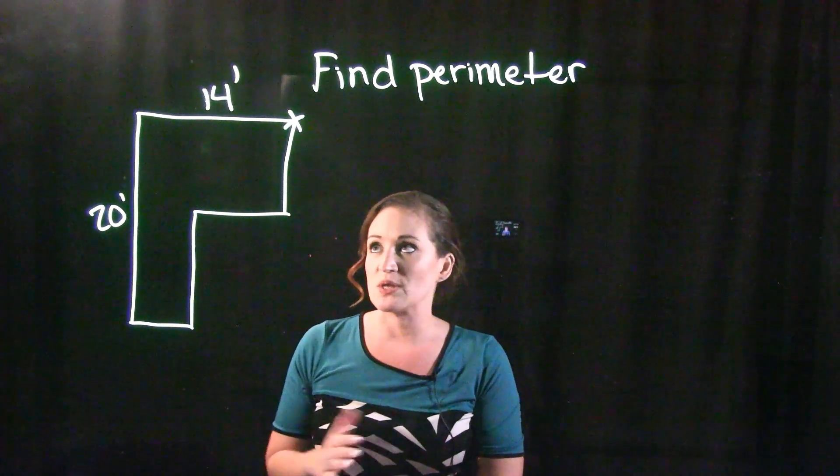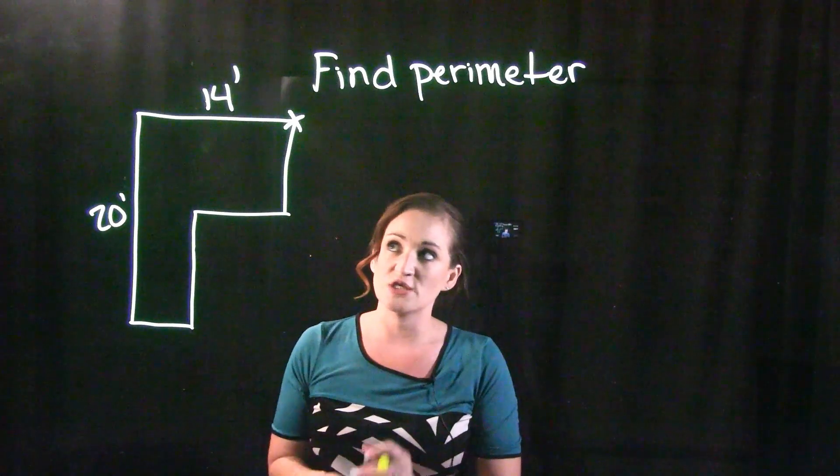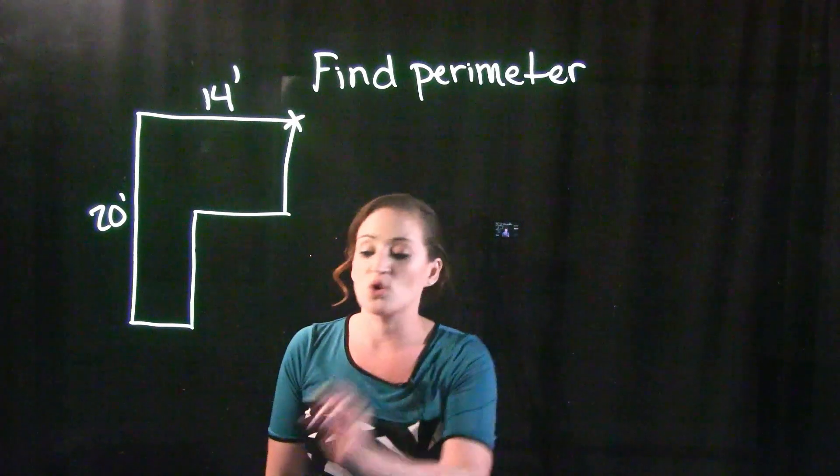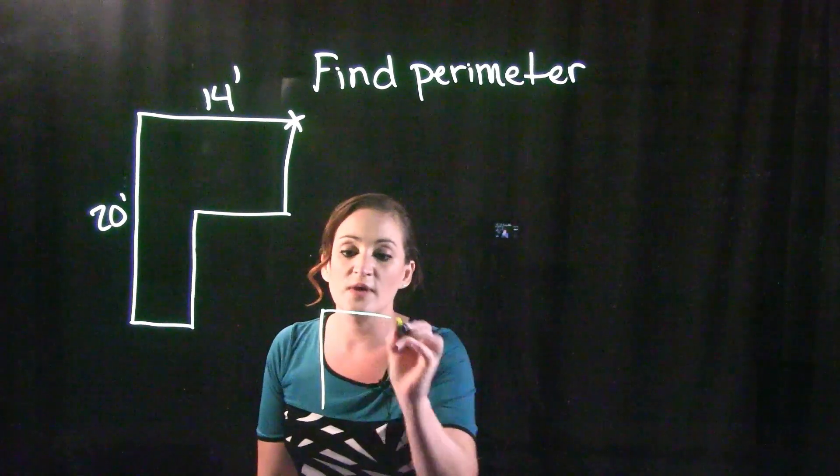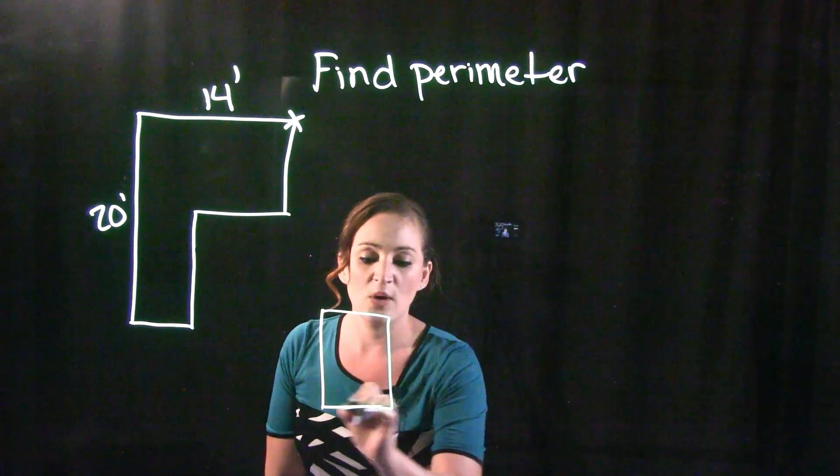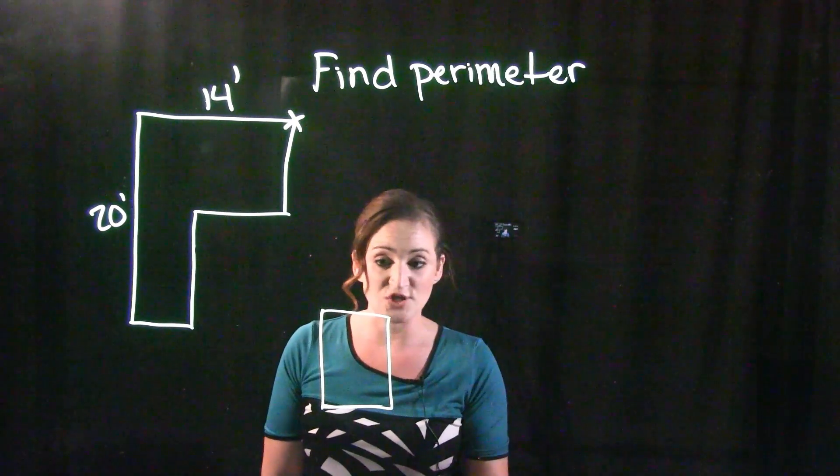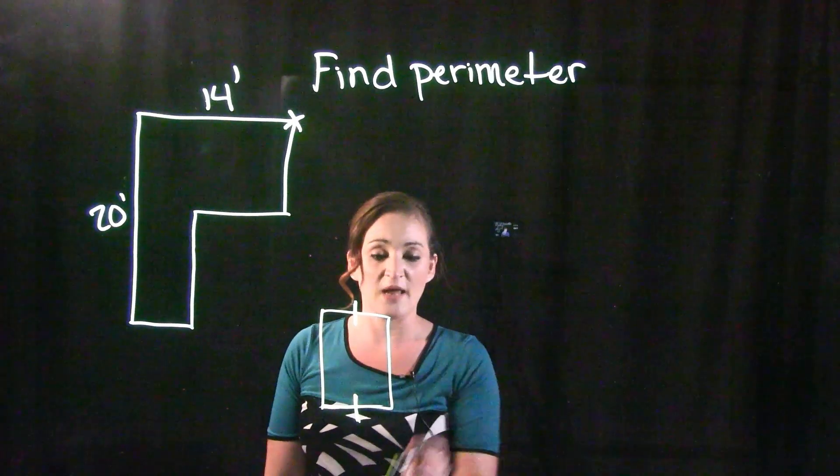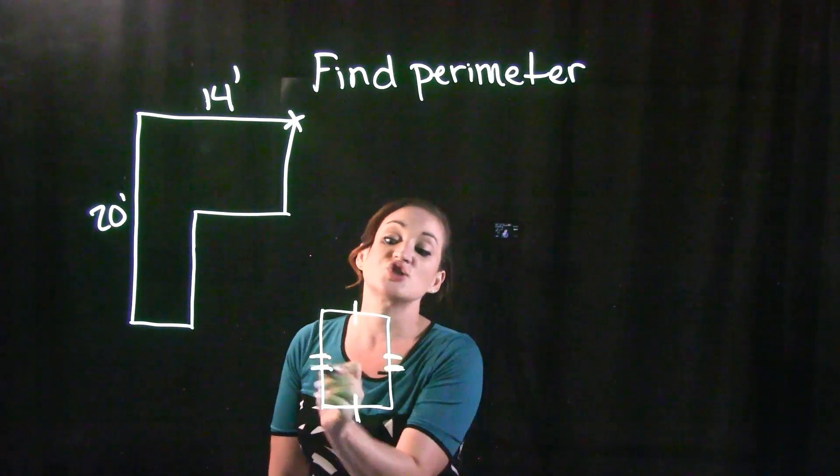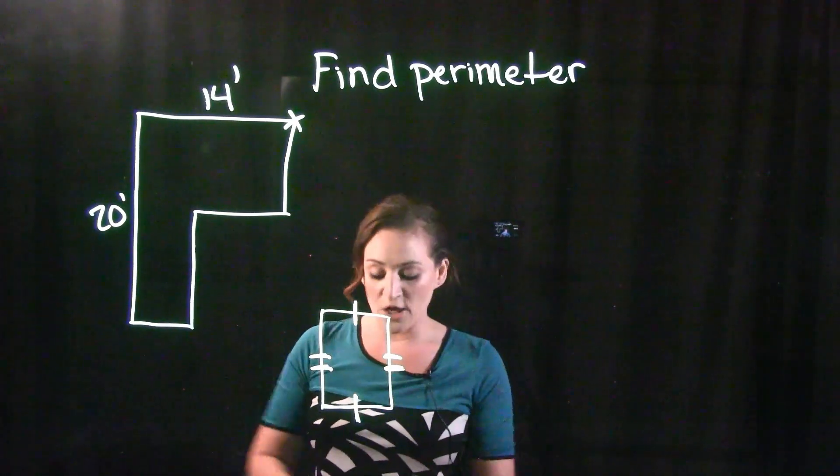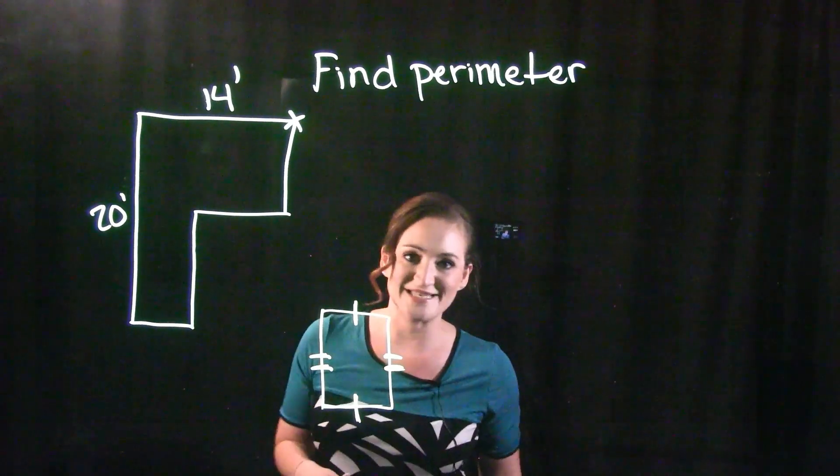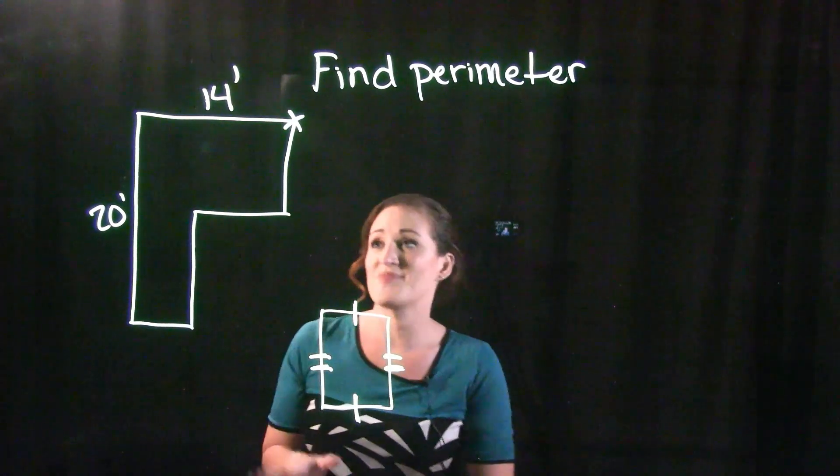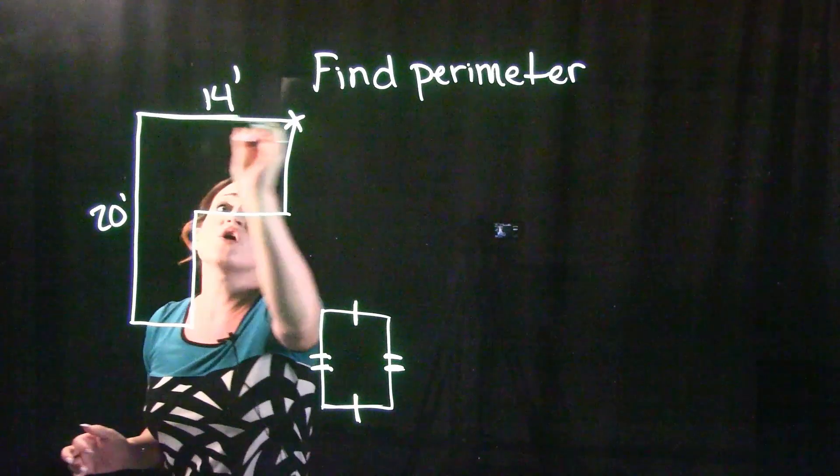So we need to do a little bit of process of elimination and try to figure out what those lengths are. Now I do want you to think about a typical rectangle. What we hopefully do know about a rectangle is that opposite sides are equal. So whatever distance this is, this is the same thing. And whatever distance this one is over here, so is that one. So I know with rectangles, opposite sides are equal. I'm going to use that to solve this particular problem. I know that this length right here is 14 feet.